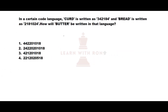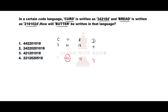Let's see the next question — a coding question. 'Curd' is coded in one format, 'bread' is coded in another format, and we need to find how 'butter' is coded. Writing numbers for the letters of 'curd': C=3, U=21, R=18, D=4. Observing the coded numbers: D gives 4, R gives 18, U gives 42, C gives 3. C, R, D are consonants and U is a vowel — consonants are multiplied by 1 and vowels are multiplied by 2.